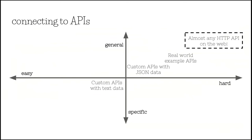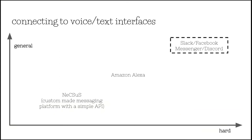And you'll notice I removed the 'easy' and 'specific' axes there, because we're up in the top right-hand corner of our diagram. Originally, when we first did this project, we started off by teaching them Facebook Messenger and Slack as the first interface they interacted with — and that had them stuck in that top right corner.